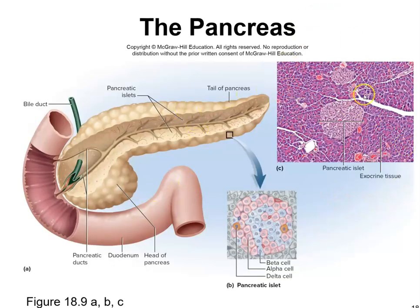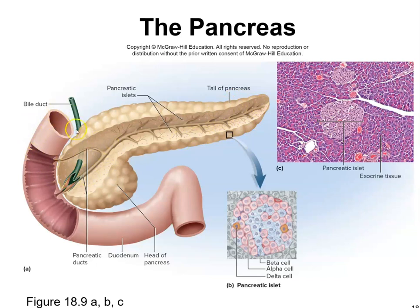This histology slide may appear on the lab practicum — the telltale sign will be the presence of the islets of Langerhans, where the alpha and beta cells are found that regulate glucagon and insulin. The pancreas anatomy includes the tail, head, and bile duct.